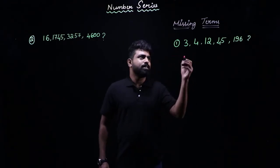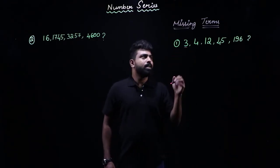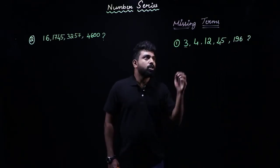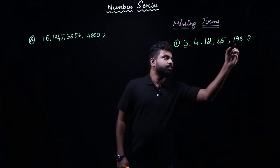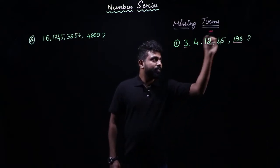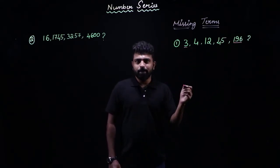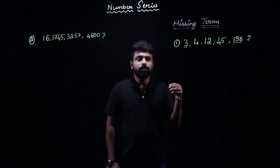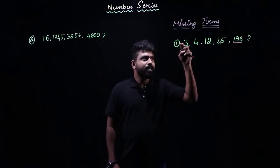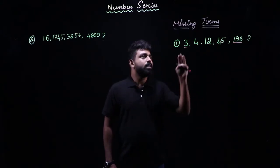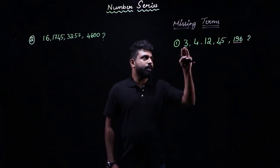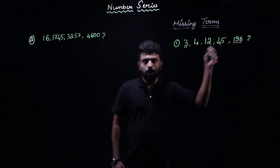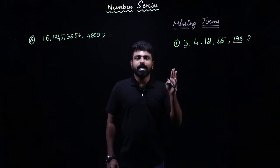Our first example goes like this. The terms are 3, 4, 12, 45, and 196. When we check the first term and the last term and take the difference between them, the difference is not very big — the difference is small. Whenever there is a small difference, we start checking if the numbers are increasing or decreasing. Here, 3 is becoming 4, then 12, then 45, then 196 — the numbers are increasing.